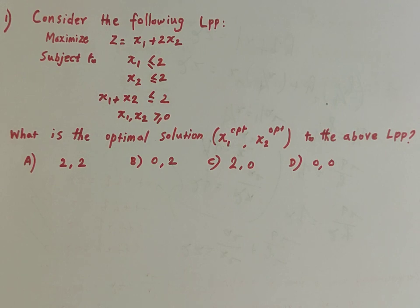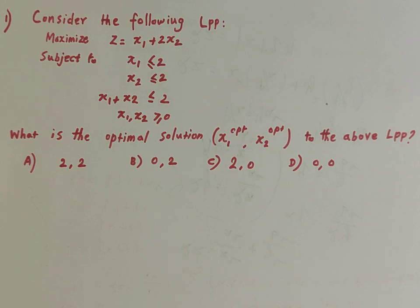First question: consider the following linear programming problem. Maximize z = x1 + 2x2 subject to x1 ≤ 2, x2 ≤ 2, x1 + x2 ≤ 2. This is a maximization problem with two variables and three constraints. What is the optimal solution (x1, x2) to the above LPP?